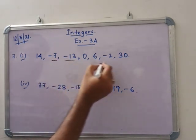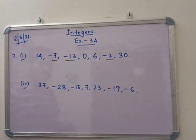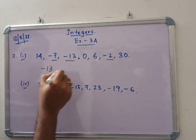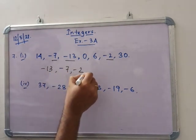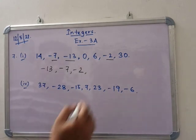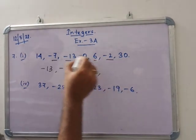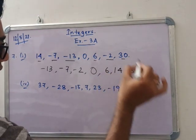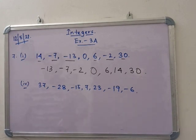How many minus numbers are there? Three numbers are there: minus 13, minus 7, and minus 2. According to the number line, the bigger the absolute value, the further left it is — so minus 13 is the smallest. Then minus 7, then minus 2, because 2 is close to 0. So next is 0, then the positive integers 6, 14, and 30. This is the sequence in ascending order.